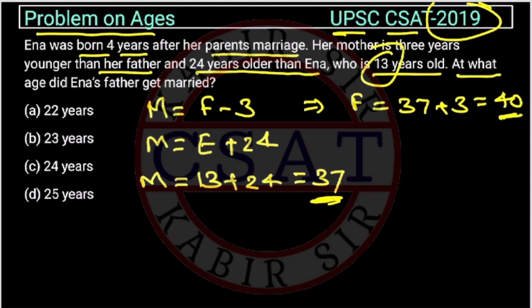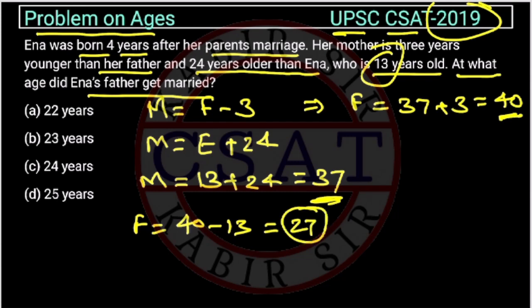What age did Anna's father get married? Anna is currently 13 years old. So the father's age at the time when Anna was born will be 40 minus 13, which equals 27 — that is the father's age when Anna was born.